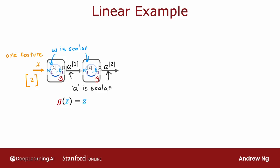So to compute a1 as a function of x, the neural network would use a1 equals g of w1 times x plus b1, but g of z is equal to z, so this is just w1 times x plus b1. Then a2 is equal to w2 times a1 plus b2 because g of z equals z.